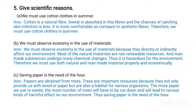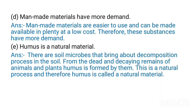D) Man-made materials have more demand. Answer: Man-made materials are easier to use and can be made available in plenty at a low cost; therefore these substances have more demand. E) Humus is a natural material. Answer: There are soil microbes that bring about decomposition in the soil. From the dead and decaying remains of animals and plants, humus is formed. This is a natural process and therefore humus is called a natural material.